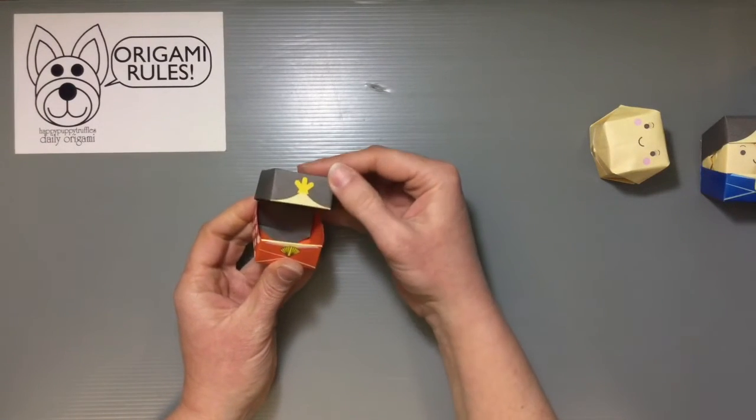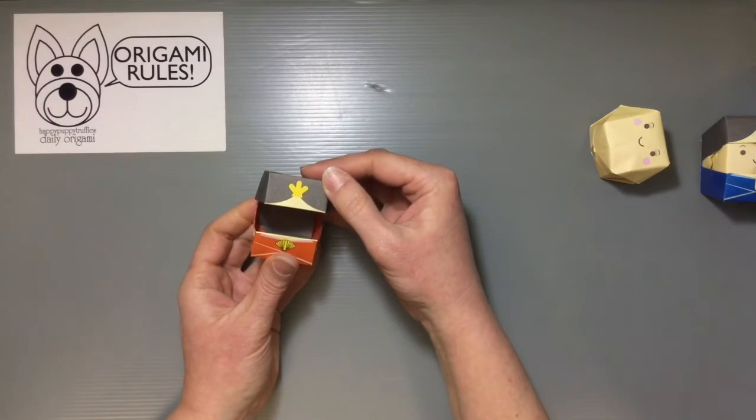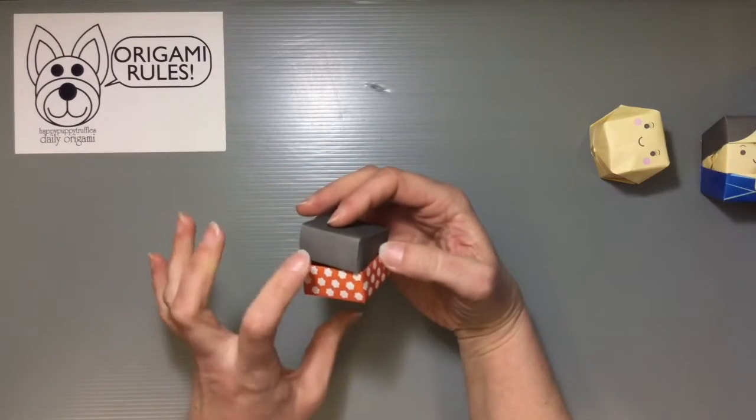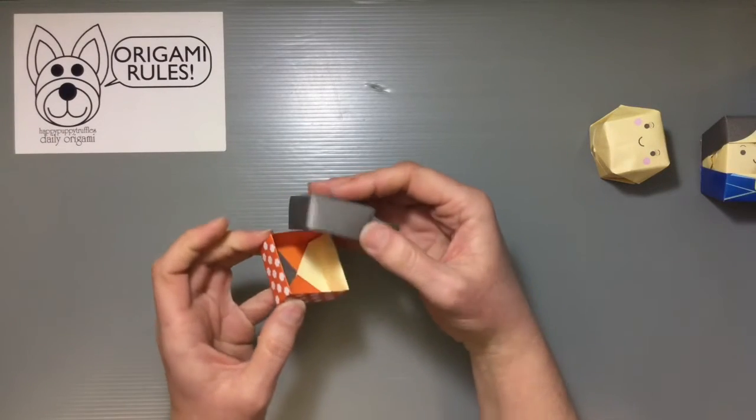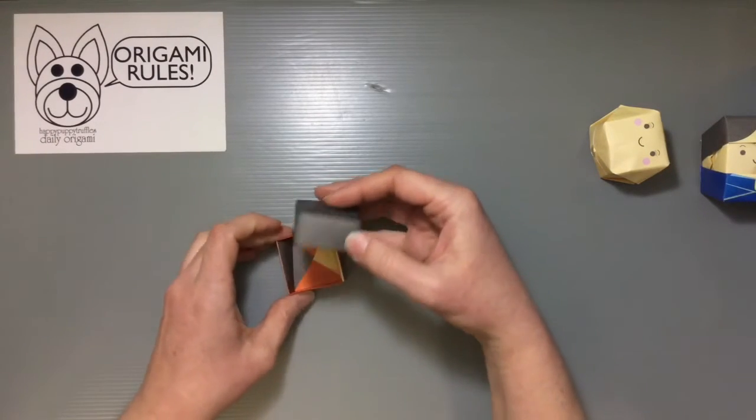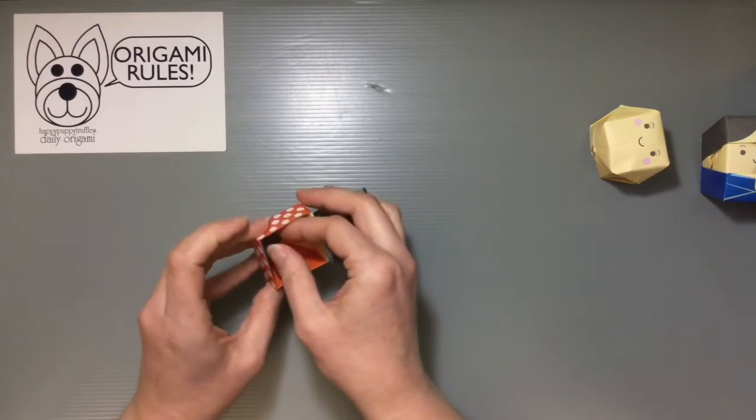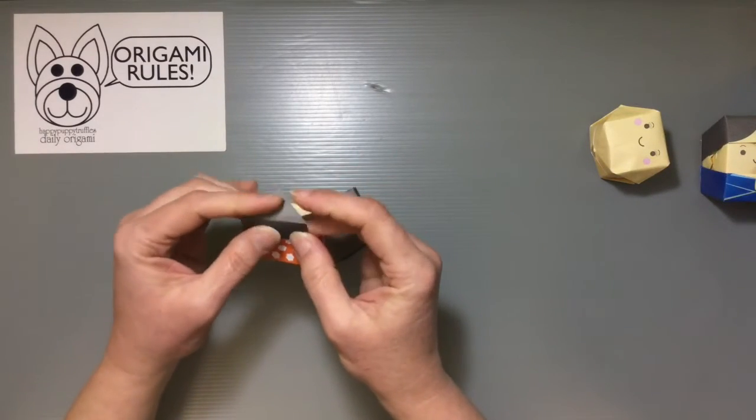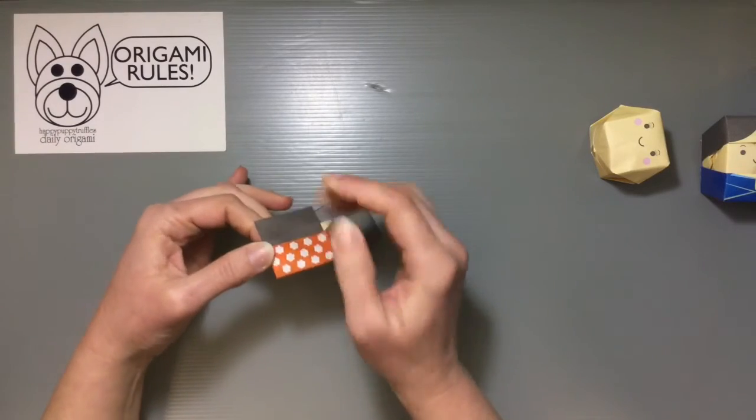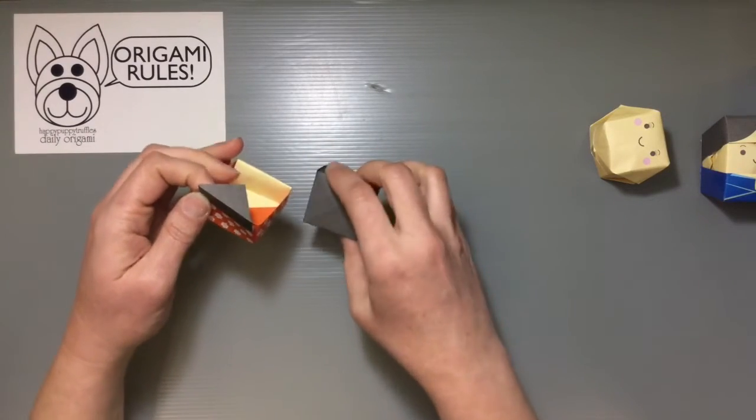Now the front obviously needs to be open because that's where my face is going to show through. So the back part is where I want to connect things with the hinge. So I'm just going to go ahead and first let this bottom part of the box open up. And I'm going to let this part bend down and I'll have a nice smooth surface then for the back of my box.